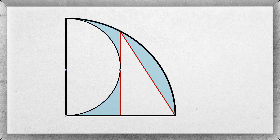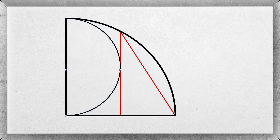The blue shaded area is not a simple geometric shape, so we cannot find this area directly. But if we first find the area of the quarter circle, then subtract the area of the semicircle and the triangle, then we will get the area of the blue shaded region.